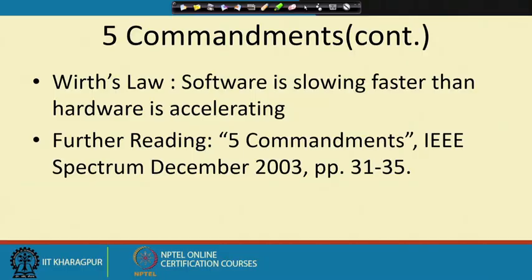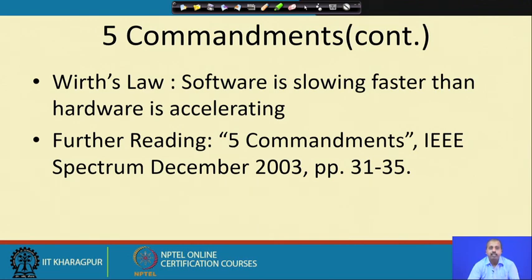Then there is Ritz's Law, which says that software is slowing faster than hardware is accelerating. The computational power is increasing, so software designers push in a lot of functionalities, and as a result the overall software speed is coming down. Hardware engineers come up with assisted tools to make hardware faster to run operating systems and software modules, but it is actually the software which is pulling back the speed advancement in hardware.